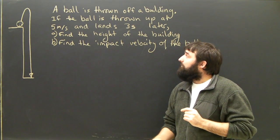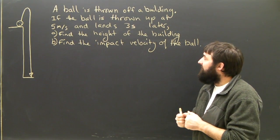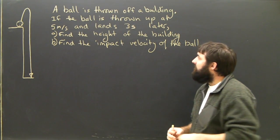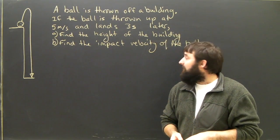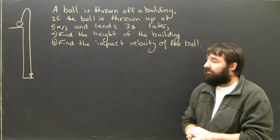A ball is thrown off a building. If the ball is thrown up at 5 meters per second and lands 3 seconds later, find the height of the building and the impact velocity of the ball.